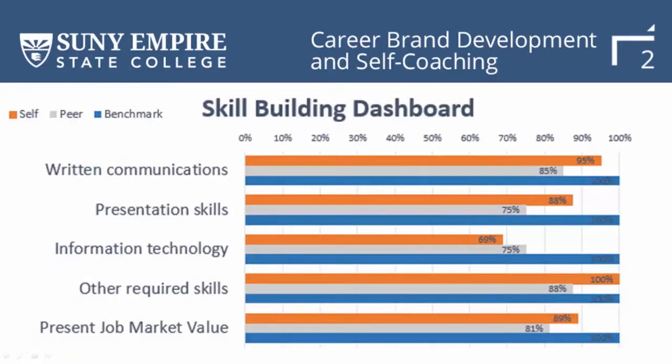In this graph, it shows you your strengths. So if my competency is strong, I'll be closer to 100%, and this is moving horizontal. If my competency is a little bit weak or needs improvement, I'm going to move a little bit further to the left, or closer to zero.